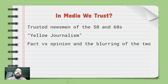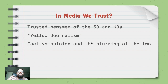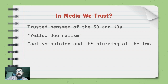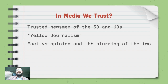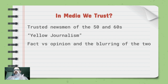There were trusted newsmen of the 50s and 60s — I say newsmen because there weren't many female anchors until the 80s and 90s. Figures like Walter Cronkite, David Brinkley, and Edward R. Murrow were in your house every night delivering facts you could trust. Each household sort of had an allegiance to one of these people and would watch every night to get their information.